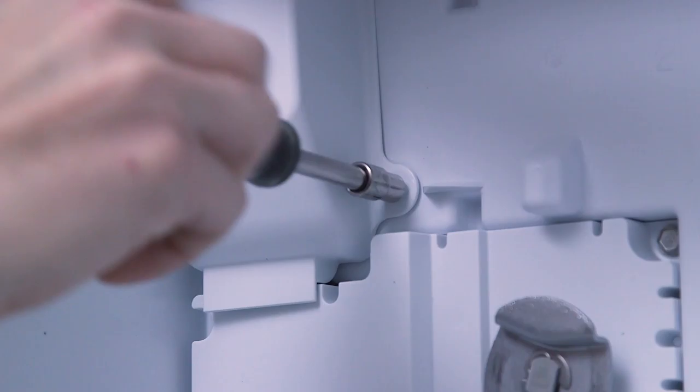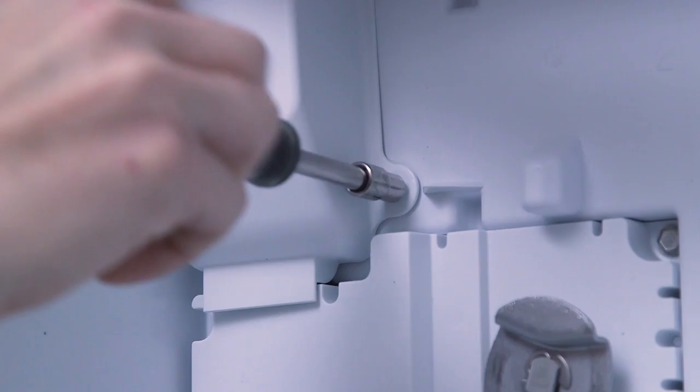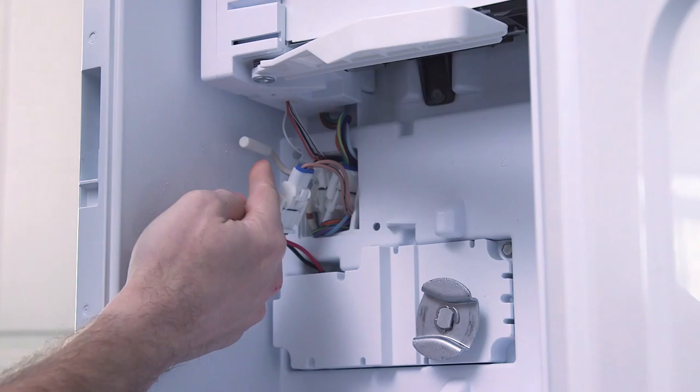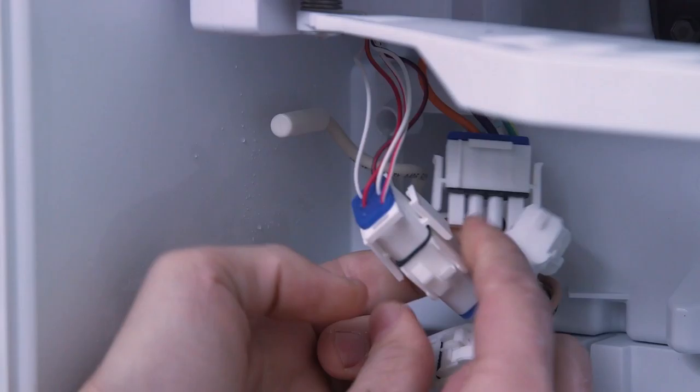Unscrew and remove the 5/16 inch hex screw head that holds the wire harness cover in place. Lift the bottom of the wire harness cover and remove it. Note that the thermistor will automatically disconnect from the cover when removed.